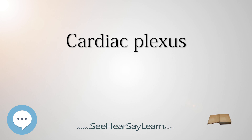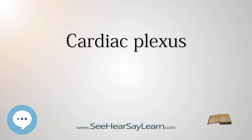A small ganglion, the cardiac ganglion of Risberg, is occasionally found connected with these nerves at their point of junction. This ganglion, when present, is situated immediately beneath the arch of the aorta, on the right side of the ligamentum arteriosum.